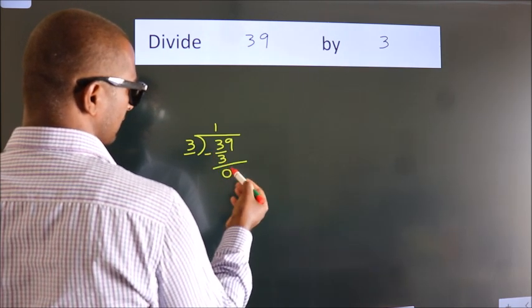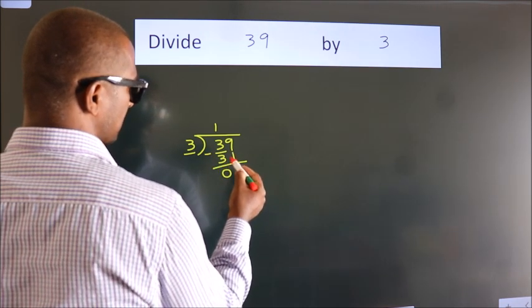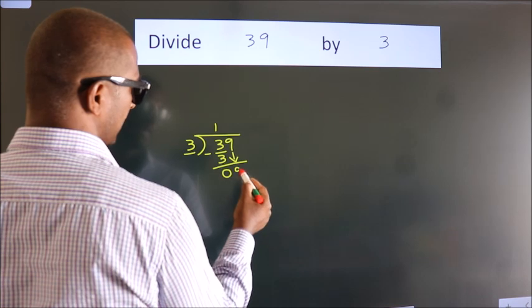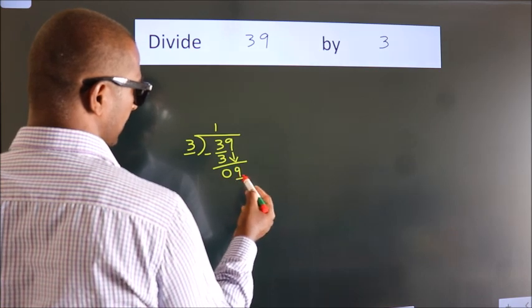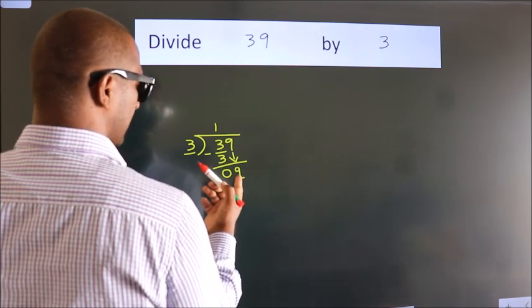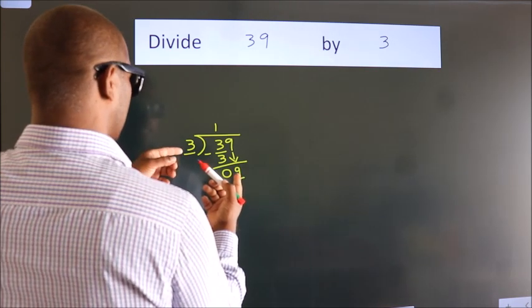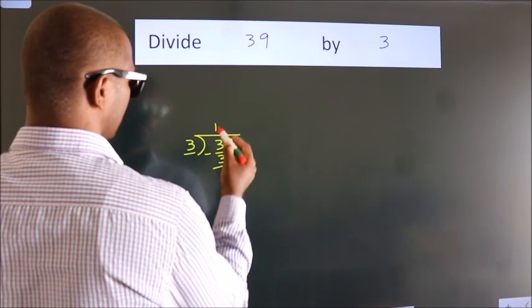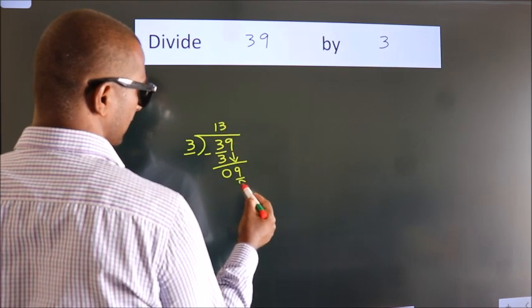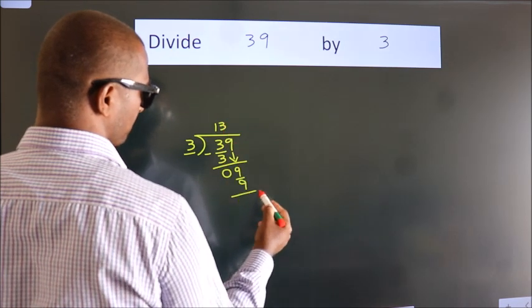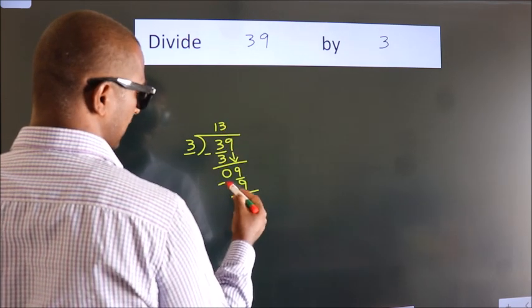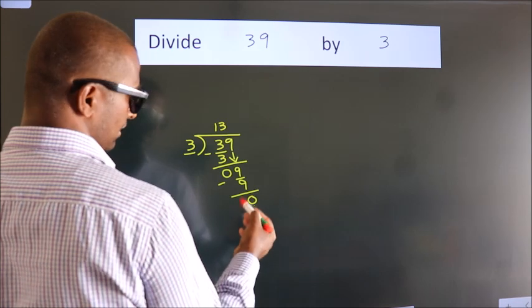After this, bring down the beside number — so 9 down. When do we get 9? In 3 table — 3 threes is 9. Now we subtract. We get 0.